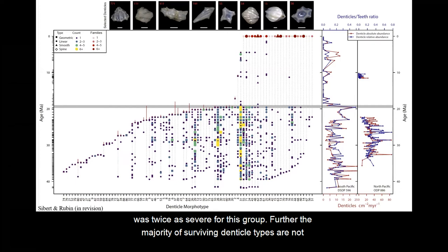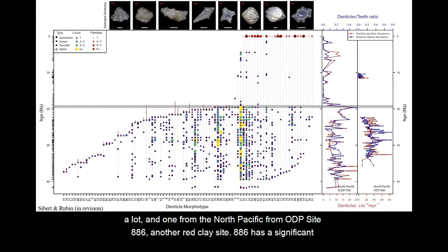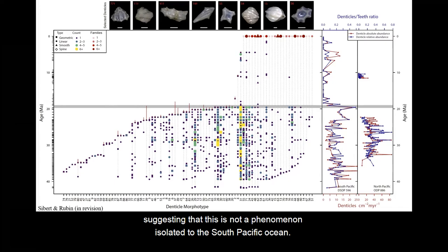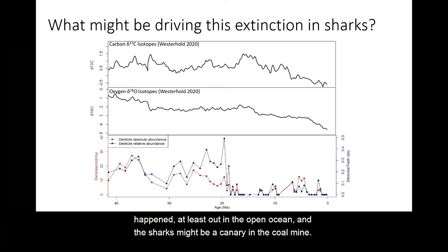The majority of surviving denticle types are not actually observed in our microfossil record after the event — we only know that they survive because we have examples of them in our modern database. There are also two graphs of denticle abundance: one from the South Pacific and one from the North Pacific from ODP site 886, another red clay site. Site 886 has a significant hiatus spanning about 22 to 11 million years ago, thus missing the extinction itself, but it does provide a useful before-and-after snapshot that confirms what we observe at DSDP site 596, suggesting this is not a phenomenon isolated to the South Pacific Ocean. Losing nearly all open ocean sharks over a mere instant in geologic time suggests that something major probably happened, and that the sharks might be a canary in the coal mine.